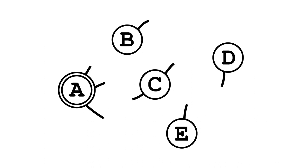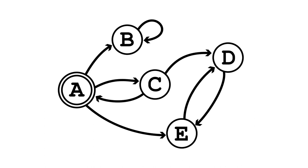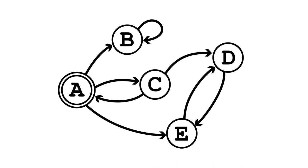This is a finite state machine. It's a really useful abstraction that can be used to model all kinds of different things. Each of these circles is a state. The machine is only ever in a single state at a time, and it is never not in a state. By convention, it starts in the node that has another circle around it — that's the start node.